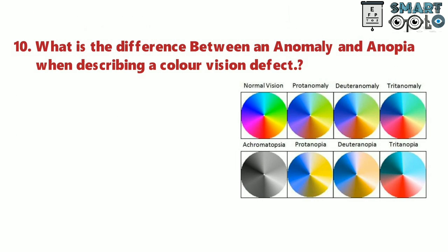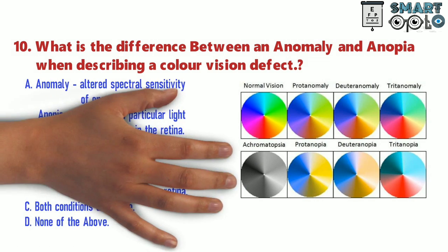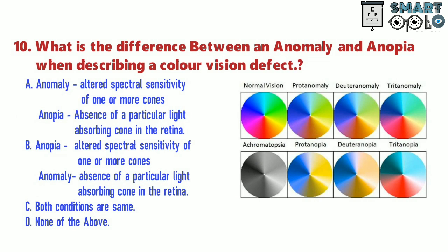Question 10. What is the difference between anomaly and anopia when describing a color vision defect? A. Anomaly: altered spectral sensitivity of one or more cones; anopia: absence of a particular light-absorbing cone in the retina.